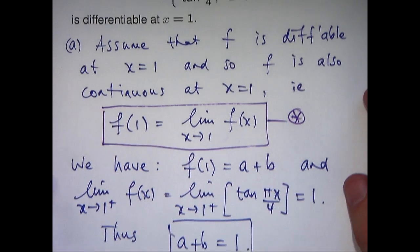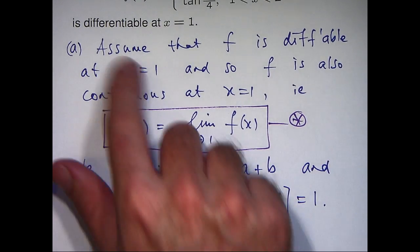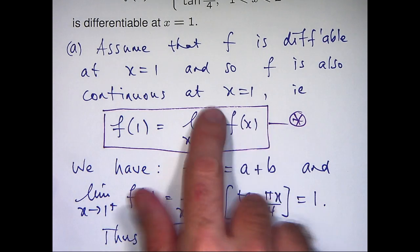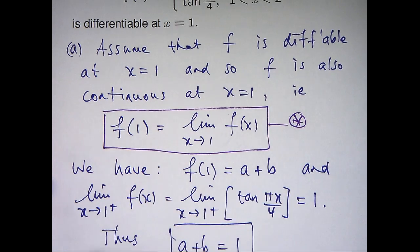You can see that basically we assumed f was differentiable at the point in question and then invoked continuity. So, how can we actually use just straight out differentiability? Well, let's do that in our second part.